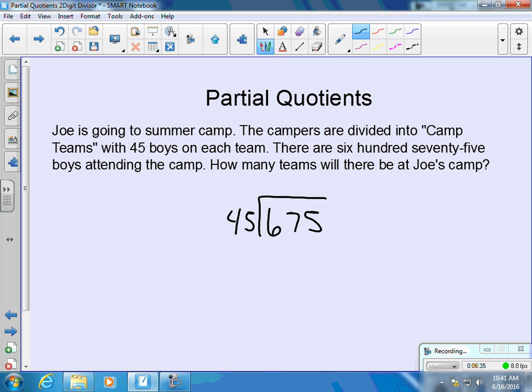So one group of 45 is equal to 45. 10 groups of 45 is equal to 450. Two groups of 45 is equal to 90. Doubling 45 and getting 90.